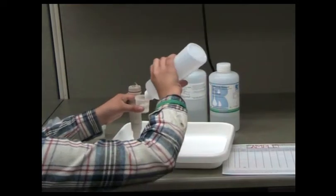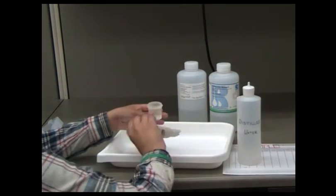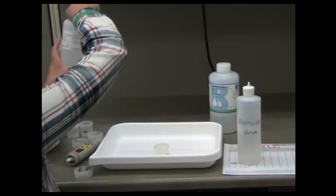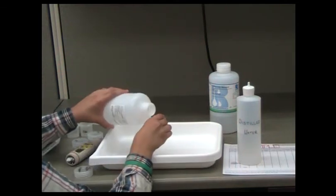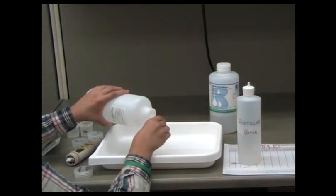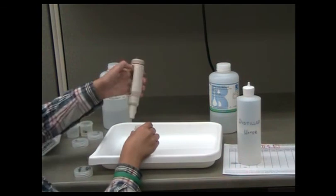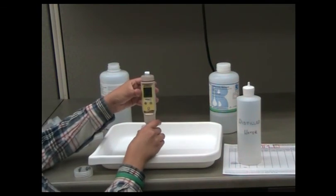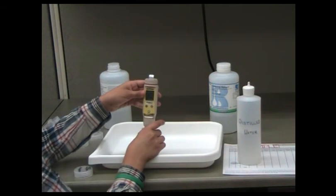Rinse the probe three times with distilled water. Repeat the calibration process with the low standard 1,413 microsiemens per centimeter. If the calibrated specific conductance for this standard is outside the range of 1,366 to 1,460 microsiemens per centimeter, please recalibrate the meter.